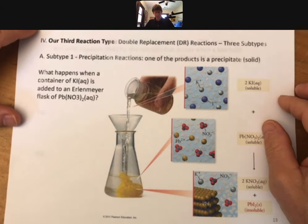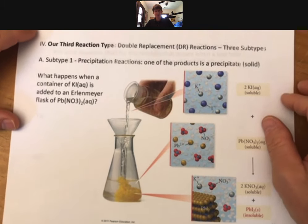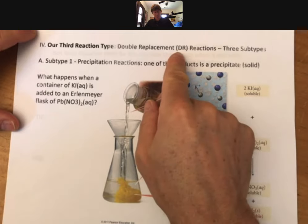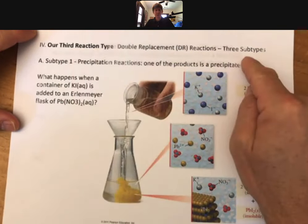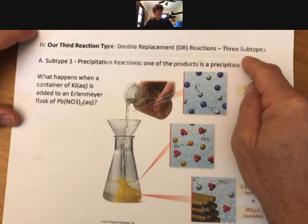Now it's time for our third reaction type. These are called double replacement or DR reactions, and for our third reaction type there are three subtypes. These are also going to involve all ionic compounds.